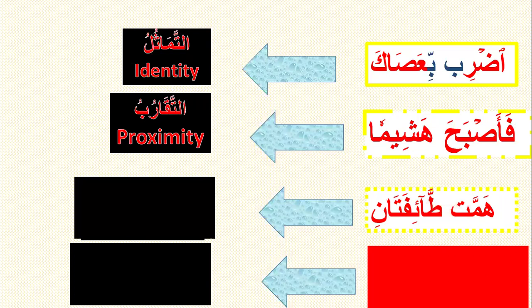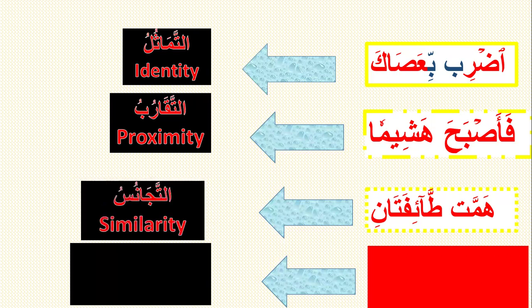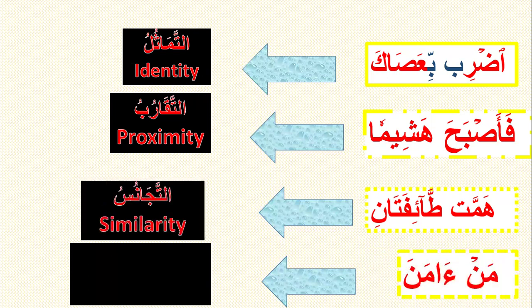What is the relationship between ta and ta? Same articulation point, but ta is light and ta is heavy — they differ in characteristics, so the relationship is similarity (Al-Tajanus). For 'min amana' — noon and hamza: the sound of noon comes from the nose, the sound of hamza comes from the throat, so the relationship between them is distance (Al-Tabaud).